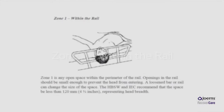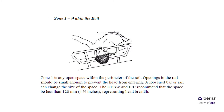Zone 1 is any open space within the perimeter of the rail. Openings in the rail should be small enough to prevent the head from entering. A loosened bar or rail can change the size of the space. The HBSW and IEC recommend that the space be less than 120 mm, representing head breadth. Zone 1 failure is very uncommon unless you have an extremely old bed system.